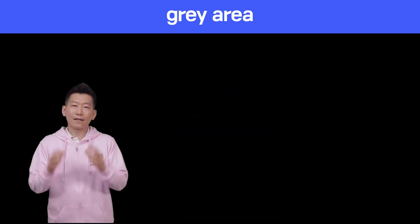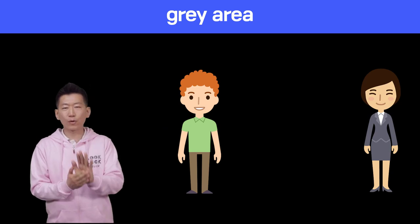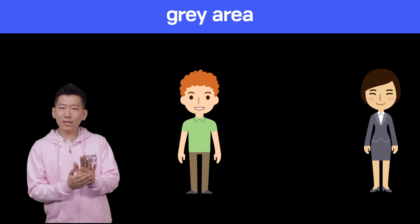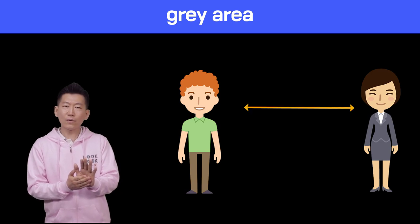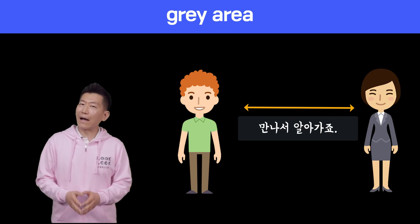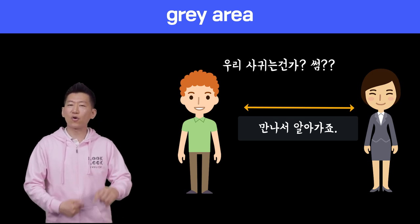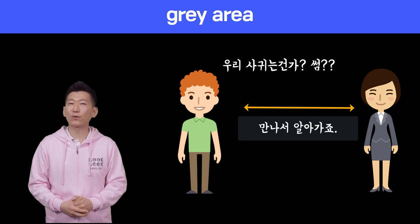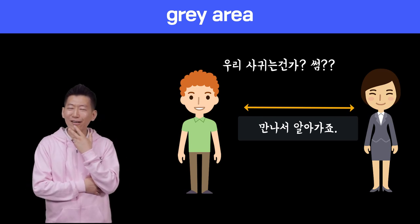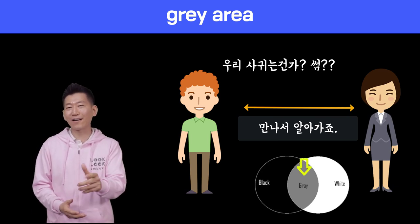남녀관계에서도 사용할 수 있는데, 어떤 사람을 만났을 때 마음이 통하면서 손도 잡고 터치도 있는데, 아직 정확하게 남자친구, 여자친구인지 모르는 — 우리가 '썸탄다'라는 표현도 쓰잖아요. 그런 애매모호한 관계일 때, gray area라는 표현이 정확한 표현입니다.